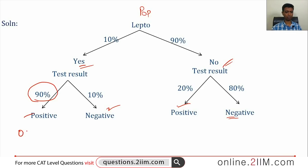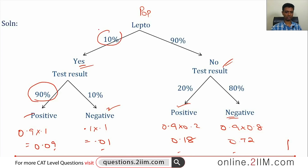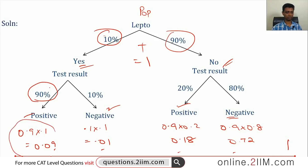Now we compute the joint probabilities using conditional probability. Person has lepto and result is positive: 0.1 × 0.9 = 0.09. Person has lepto and result is negative: 0.1 × 0.1 = 0.01. Person does not have lepto and result is positive: 0.9 × 0.2 = 0.18. Person does not have lepto and result is negative: 0.9 × 0.8 = 0.72. These four values sum to 1, confirming they capture everything possible.